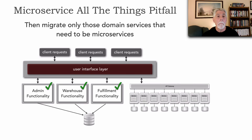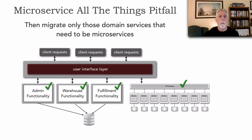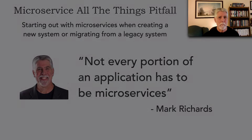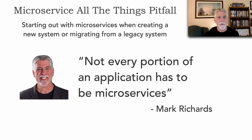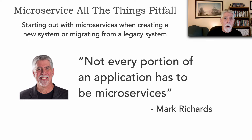So what we end up doing is migrating further to microservices just that single domain service, meaning all of those services now have the proper level of architectural capabilities within that architecture. This kind of hybrid is extremely popular and avoids the microservice all the things pitfall by not creating microservices when it's not actually needed. To summarize: not every portion of an application has to be microservices. By moving to service-based architecture first, it allows us to pause, not have to worry about data yet, and determine which portions can stay there and which domain services to break apart further into microservices.